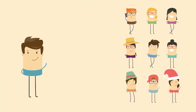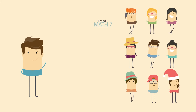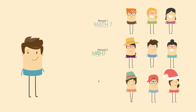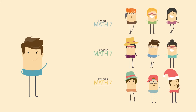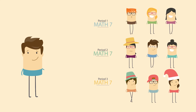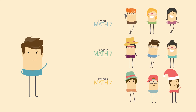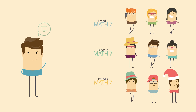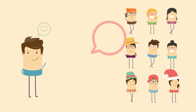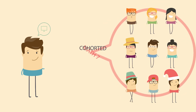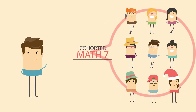With administrative cohorting, Ben can combine all the kids in his three grade 7 math classes into one combined grade 7 math class. This way he can manage all his students in one course in Brightspace, making it easier to send assignments and assess their progress.